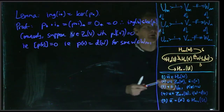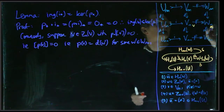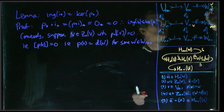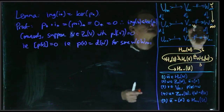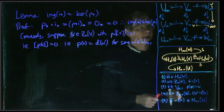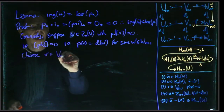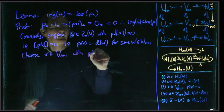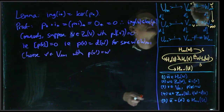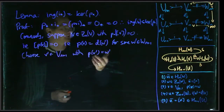So let's mark some of the things we're considering. We started with a v here, and then we had p(v) here, and p(v) is going to be the image of some w' there. Now we're going to choose some v' in V_{n+1} with p(v') equal to w'. In other words, we're going to choose a v' up here mapping to that w', and we can do that because p is surjective.